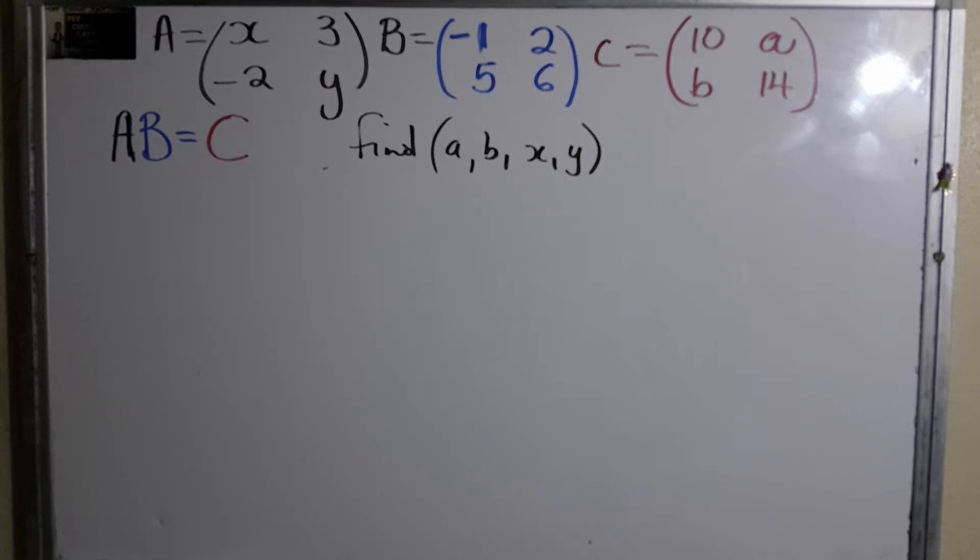We are looking at equal matrices. A is equal to (x, 3; -2, y), B is equal to (-1, 2; 5, 6), while C is equal to (10, a; b, 14). The rule is AB equals C, and it asks us to find a, b, x, and y. Pause the video and try.